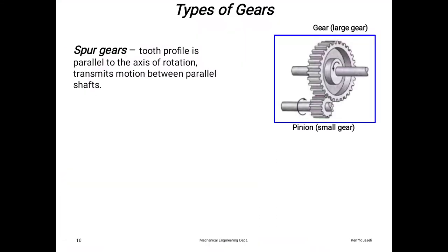Here are two gears: the large gear and small gear called pinion. Spur gear tooth profile is parallel to the axis of rotation, transmitting motion between parallel shafts. Internal gear: spur gear is classified into another type, where one big gear has a small gear placed inside which rotates.